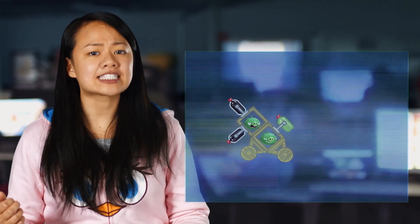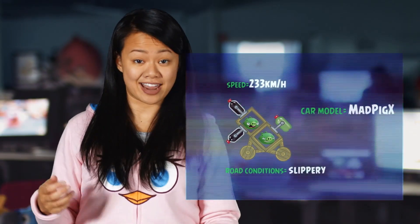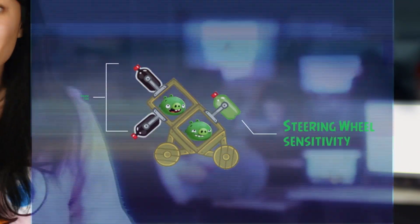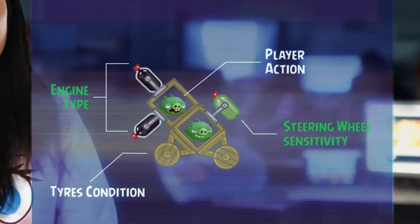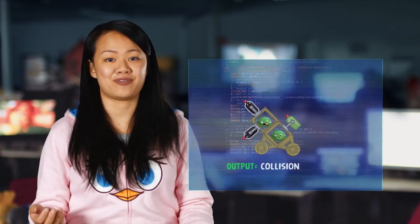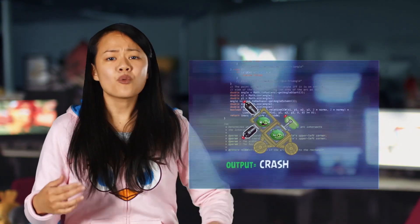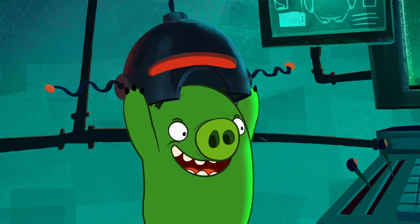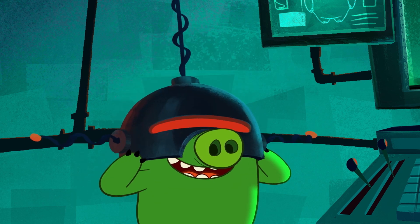In games, algorithms can control, for example, how fast a vehicle can go or what happens to the parts of the vehicle when it crashes. An algorithm takes into account the situation, other information, and based on the idea the coder had, calculates an output — that is, what happens to the vehicle. So an algorithm is a coder's way to try and make the computer think.